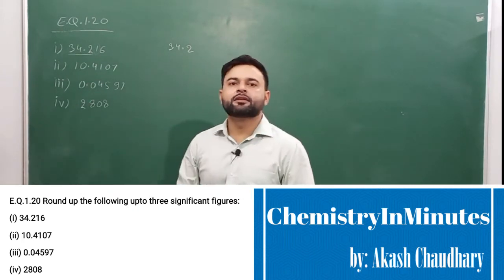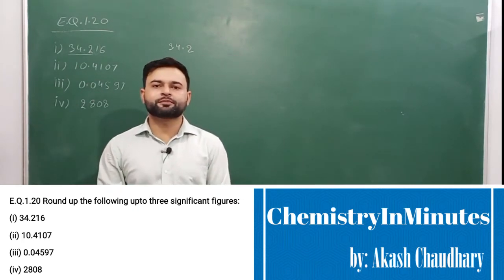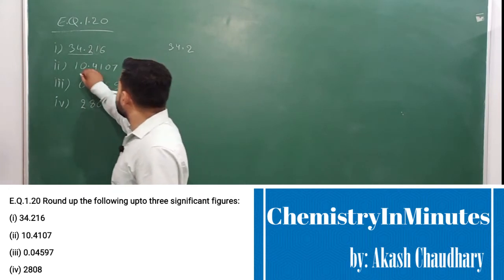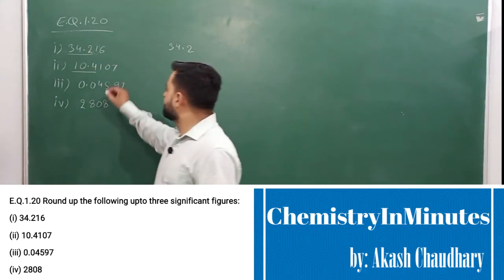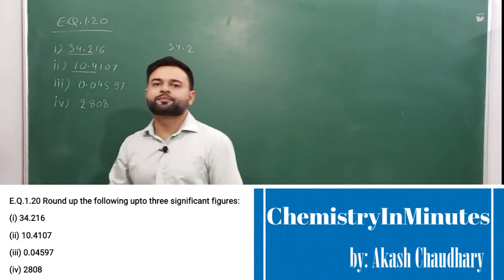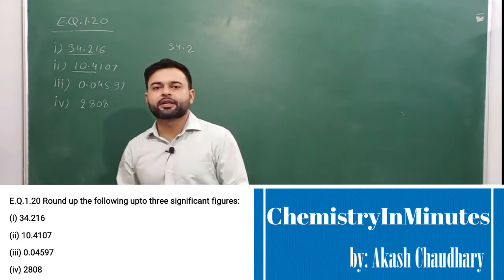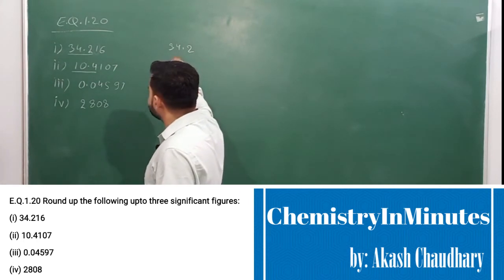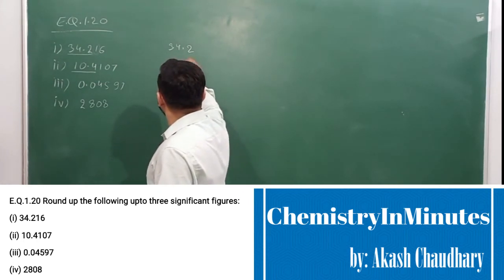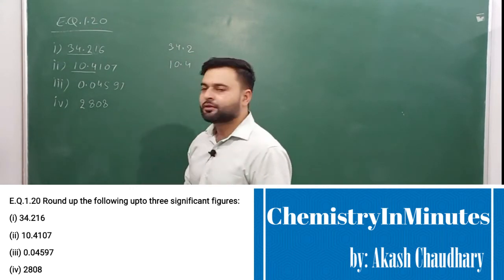The second, 10.4107. In this, 3 significant figures are up to here, 10.4. The number to be dropped is 1. This is again less than 5, so the preceding number will remain unchanged. The rounded up number will be 10.4.